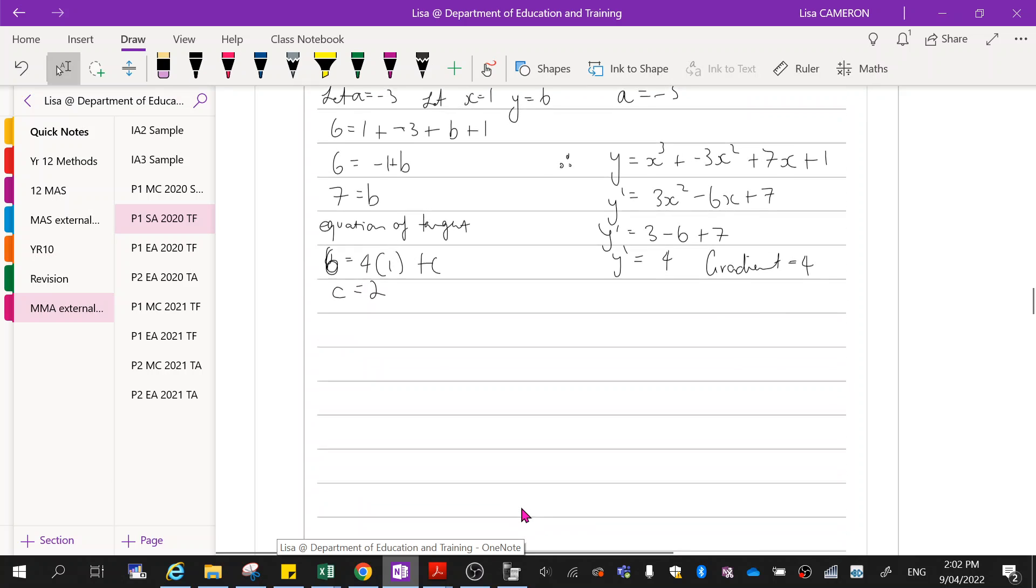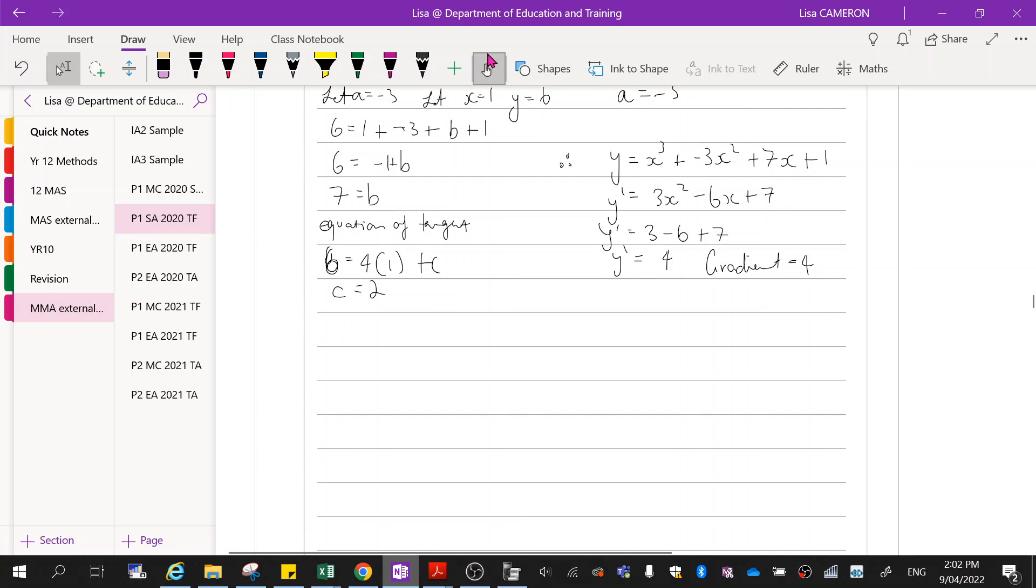So last thing I've got to do is state the equation of the tangent. Therefore equation of the tangent is y equals 4x plus 2. And we're done.